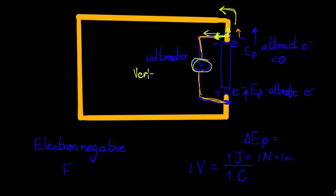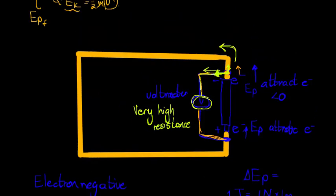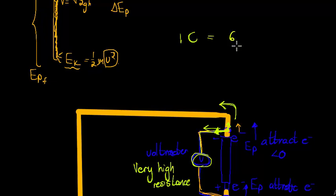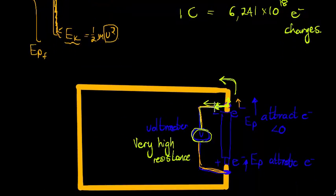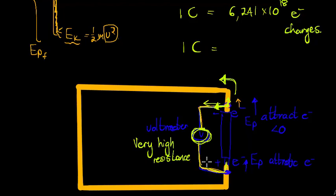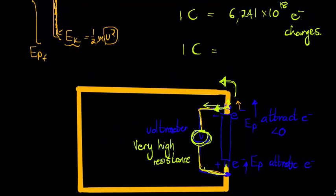A voltmeter has very high resistance — it doesn't want to measure how many coulombs are passing per point. Remember we said one coulomb represents 6.241 times 10 to the power of 18 electrons or charges. It doesn't care how many pass through; it just wants one coulomb to come in. When that coulomb comes in it's going to measure how much energy that one coulomb has, and then that coulomb goes back to complete the path while the rest of the electrons continue the main circuit.